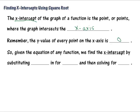And that helps us to be able to solve. So given the equation of any function, we find the x-intercept by substituting 0 in for y and then solving for x. And that's basically what you're going to be doing in this entire lesson. You're going to be substituting 0 in for y and solving for x using square root.